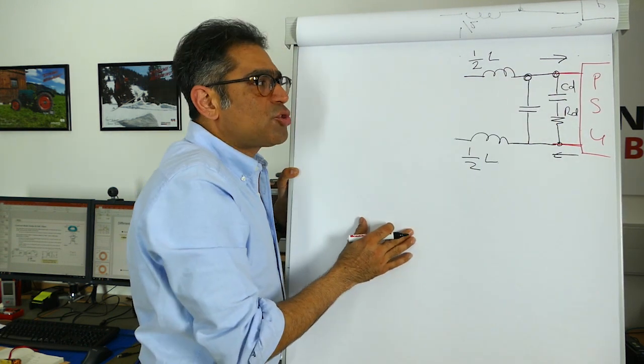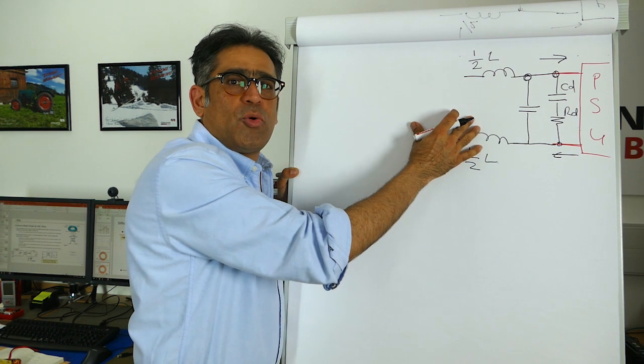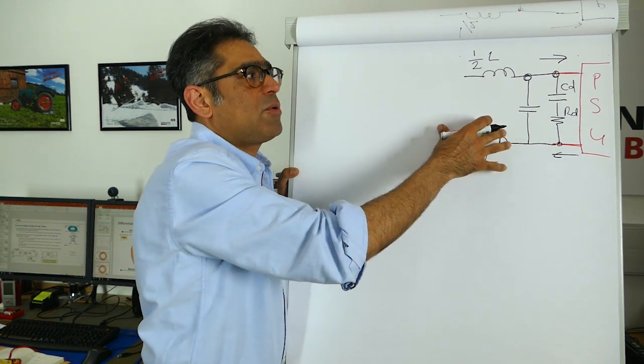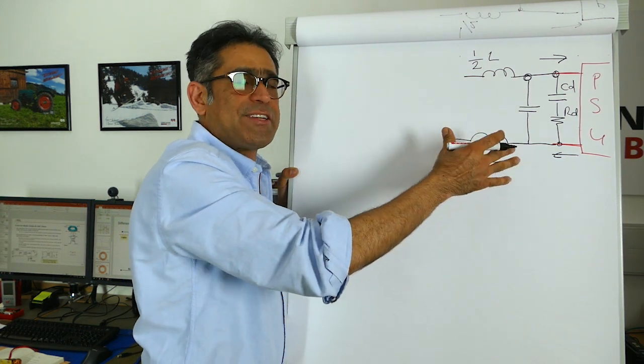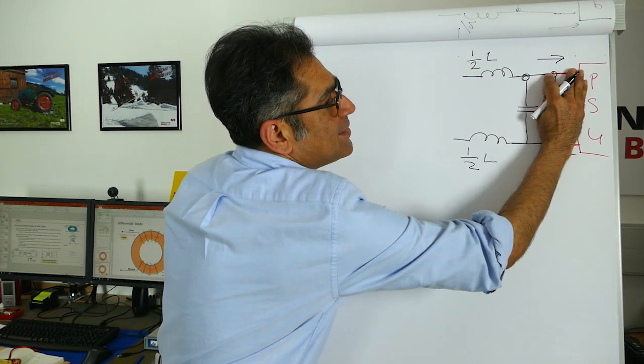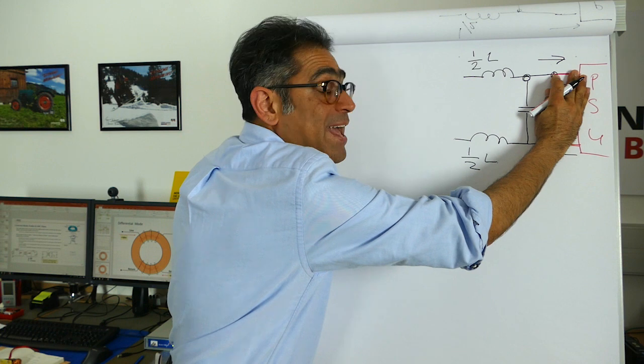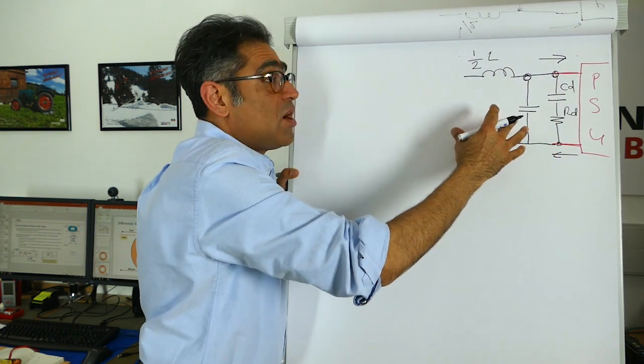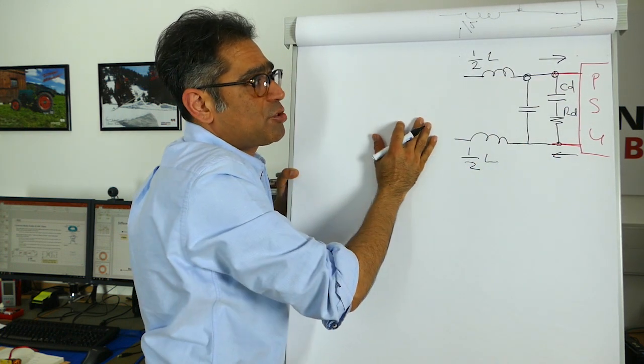These two are there to make sure that the filter does not cause instability with the power supply according to Middlebrook's stability criteria but we will talk about that in a different video. So for now this is the major part that we are interested in and this part is what is filtering the differential mode noise.